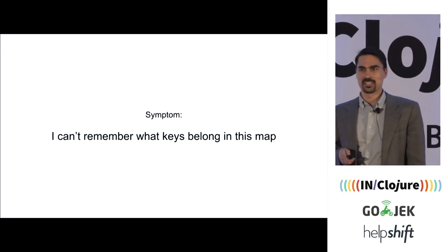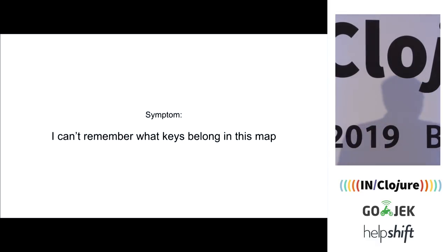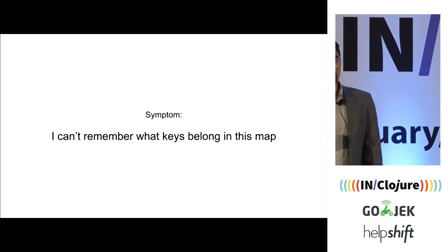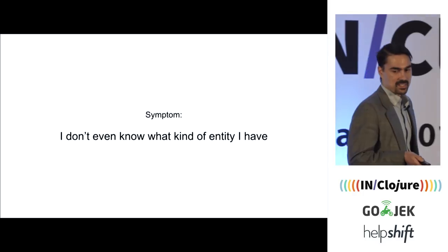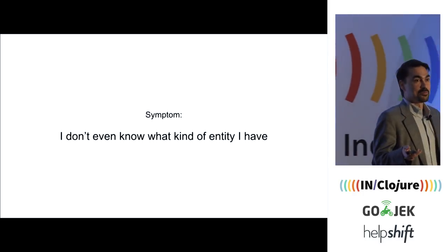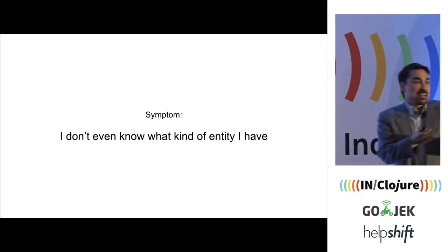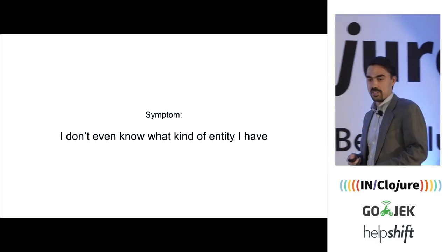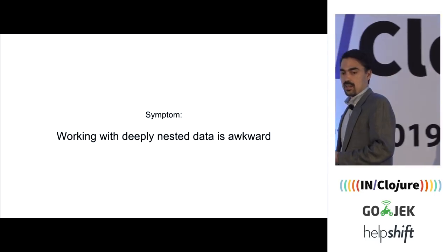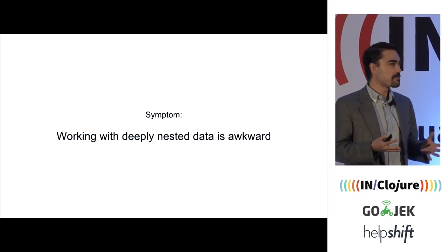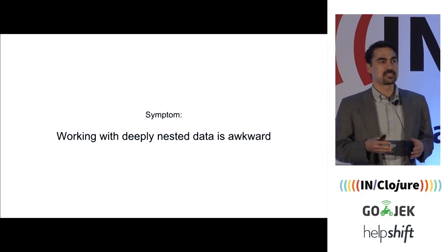About half of you have raised your hands. I was talking to someone yesterday here at the conference and they were like, yes, yes, how do I do that? So I'm glad I'm talking about this. Another common problem: I don't know what kind of map I have — what is this even? I got this passed to me in this function and I don't know what it is. And then there's awkward code for manipulating these deeply nested structures.